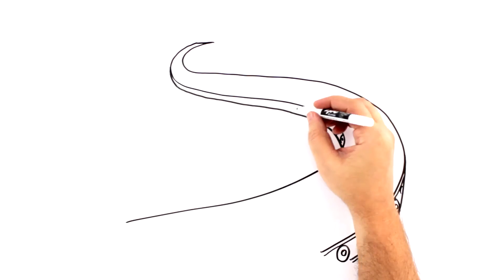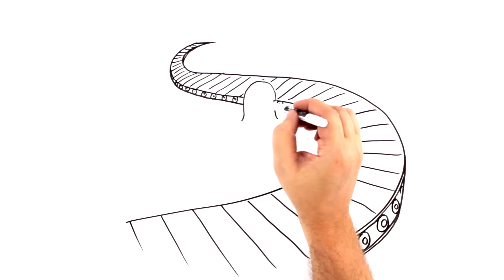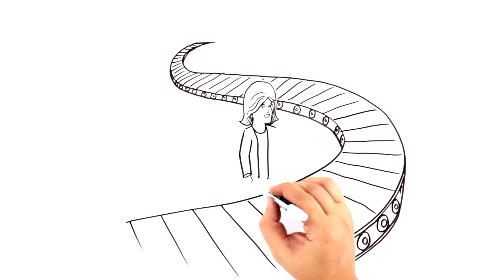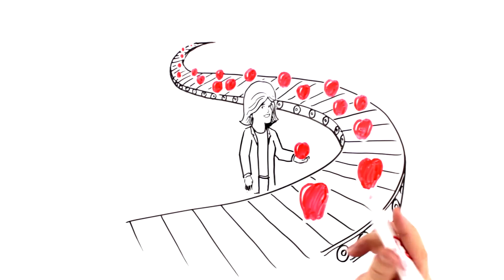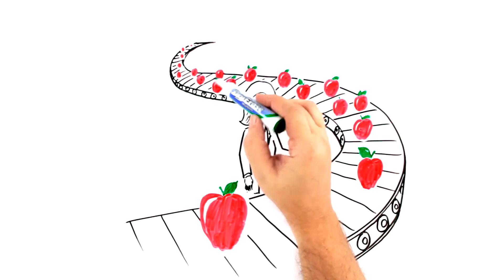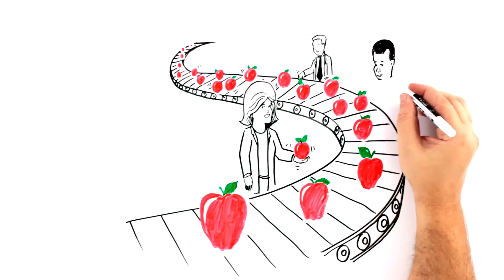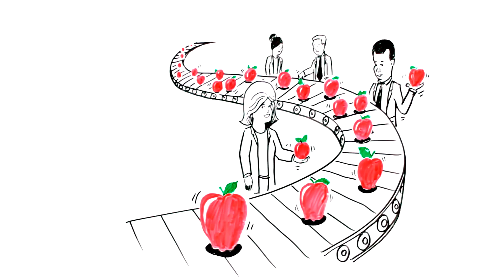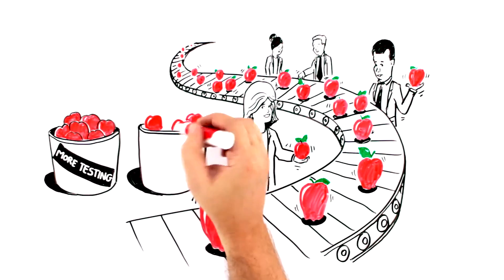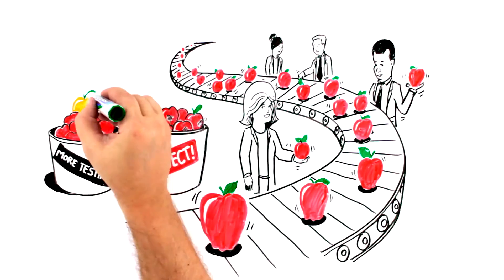The monoclonal development group then used state-of-the-art technology to obtain the most promising clones for testing. They selected nearly 1,000 clones, which provided the development scientists with a lot of choices and increased the likelihood of developing a really outstanding antibody. But of those 1,000 clones, only one will become the golden apple.